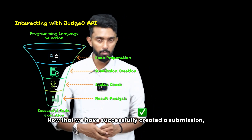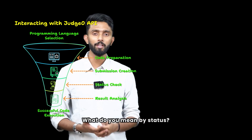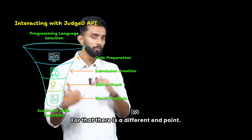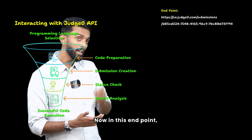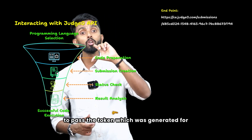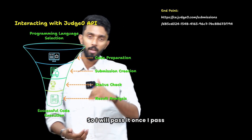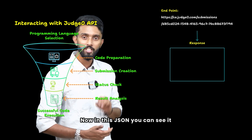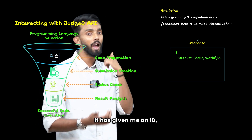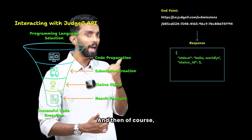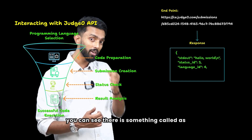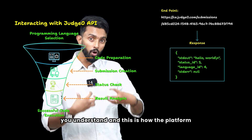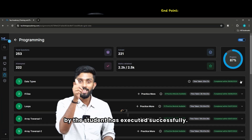Now that we have successfully created a submission, I want to know the status of my submission. Status means: did it execute correctly? Did I get my output? Was there any error or problem? For that, there is a different endpoint. In this endpoint, after the submission path, I pass a slash followed by the token that was generated for me previously. Once I pass it and send it to JudgeO's API, the API generates a response — another JSON object. In this JSON, you can see it has given me stdout, which is the output of my program; a status ID, whether it was successful; a language ID; and stderr, which is the error field. Right now the error is null because there was no error. This is how TAP Academy's platform knows that the code submitted by the student has executed successfully.